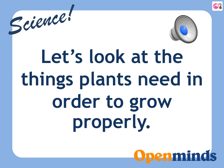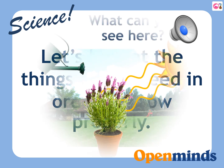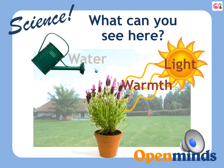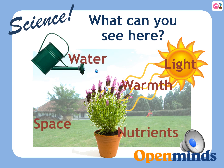Let's look at the things plants need in order to grow properly. What can you see here? Water. Light. Warmth. Space. Nutrients.